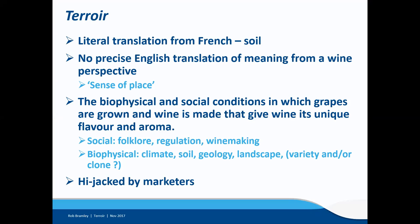Those social factors, at least in a European context, could be characterised somewhat crudely as folklore. Regulation through appellation systems is certainly important, and more recently it's been recognised that winemaking is part of those social factors, in terms of particular approaches different winemakers might have. The biophysical factors include things like climate, soil, geology, landscape, and the variety and clone that's been applied. I'm going to particularly focus on soil and landscape in this talk.